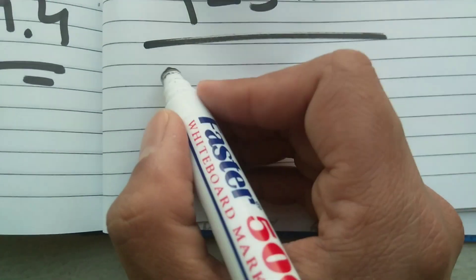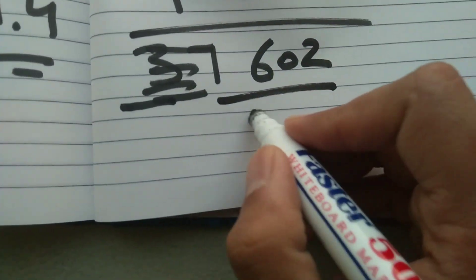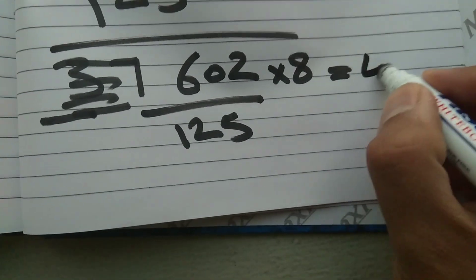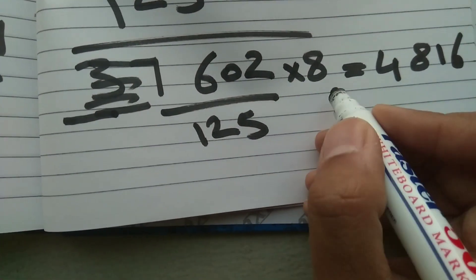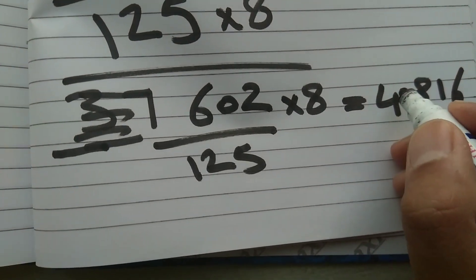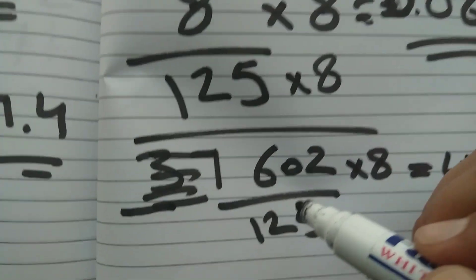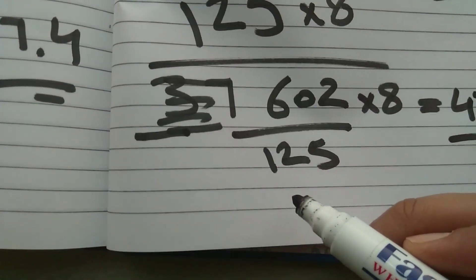Let's do another example for 125 — this time with a bigger value: 602 divided by 125. Multiply 602 by 8; the answer is 4816. Since 125 multiplied by 8 gives 1000, move the decimal three places back — so the point goes here, giving 4.816. You can check this in a calculator and get the same answer, instead of doing the long division process.